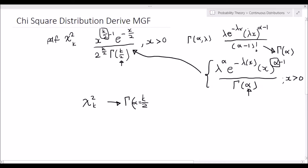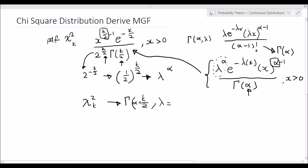We also need to determine what lambda will be. Lambda must appear to the power of alpha. In the chi-squared PDF we see 2 to the power of k over 2 in the denominator, which is the same as 2 to the power of negative k over 2, or equivalently one-half to the power of k over 2. This implies lambda to the power of alpha equals one-half to the power of k over 2. Since alpha is k over 2, lambda must equal one-half.